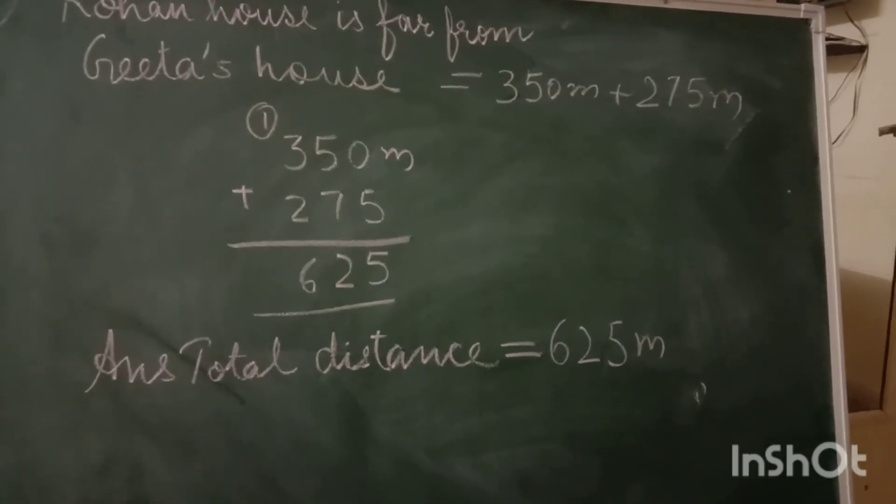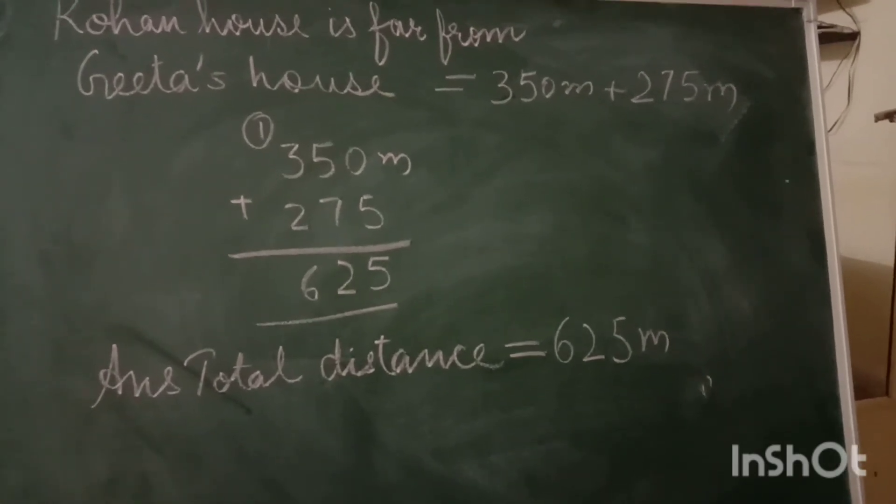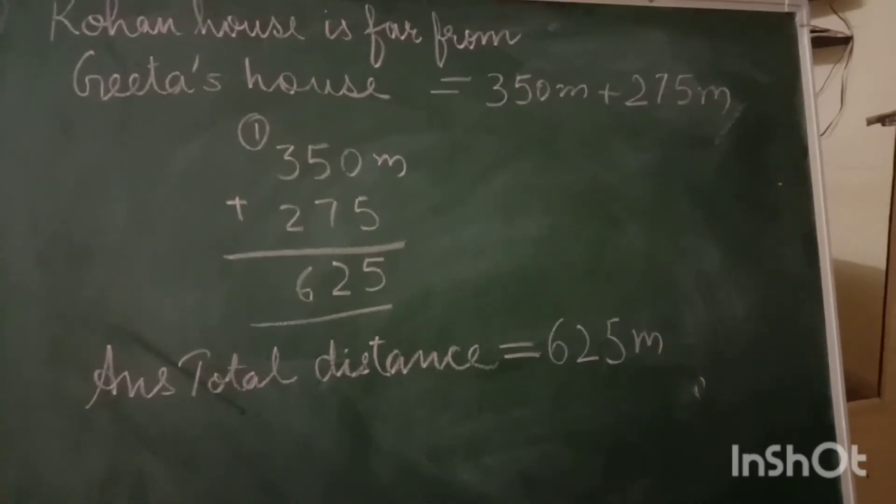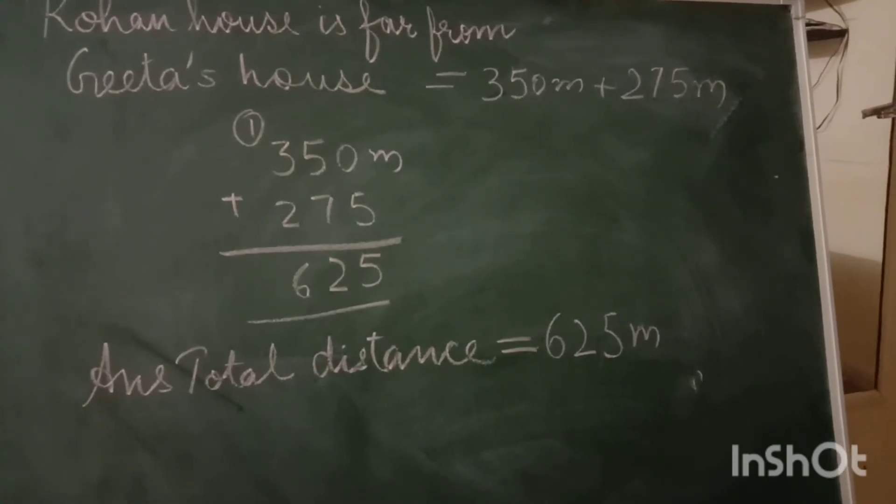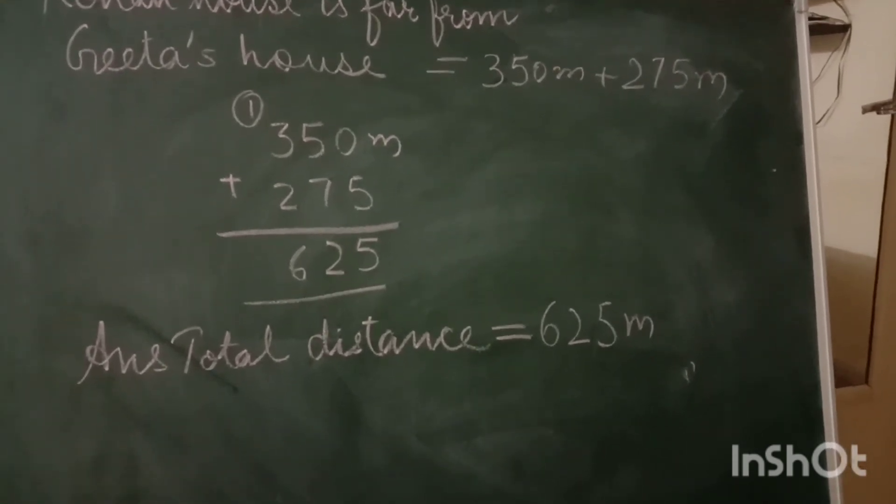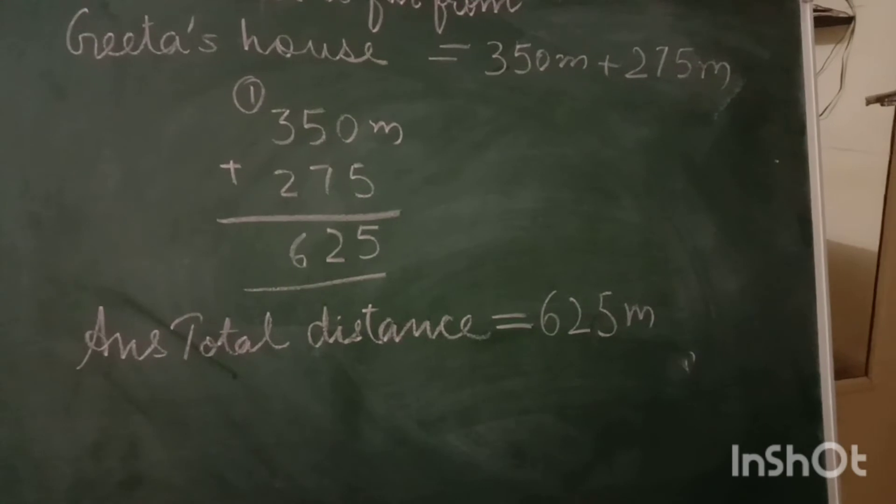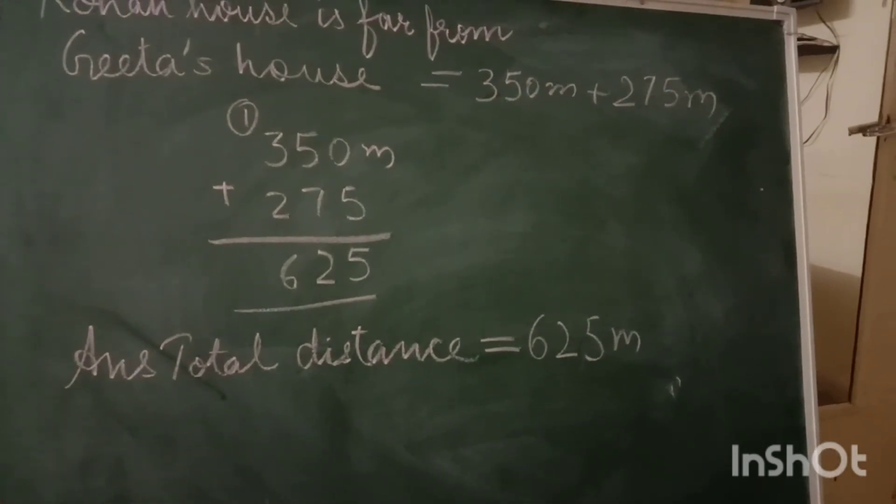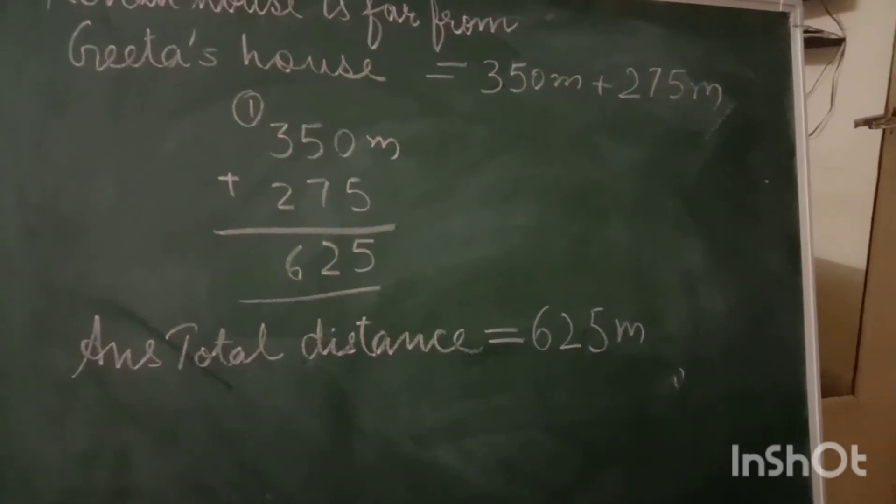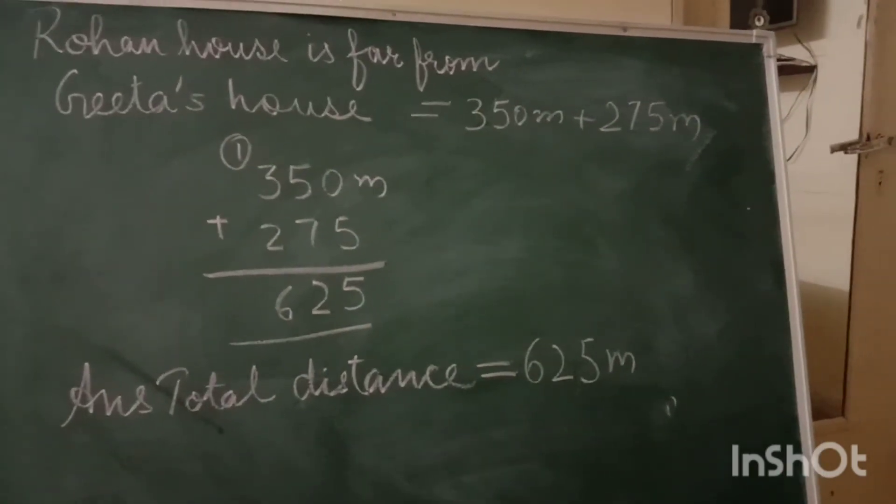So B: Rohan's house is far from Geeta's house total, you have to take out Rohan's house plus Geeta's house distance. So you have to add 350 plus 275 meters. Addition, you know, you get the answer. So total distance covered by Rohan's to Geeta's house is 625 meters. So you have got the solution for B also.